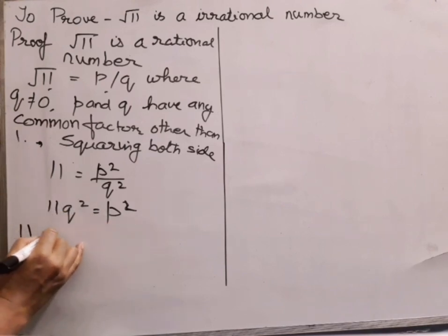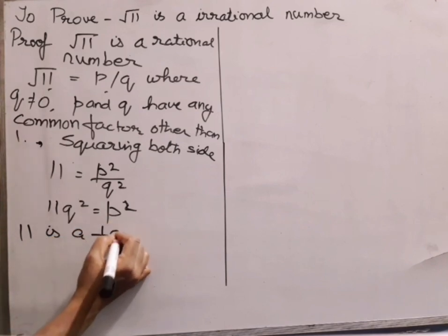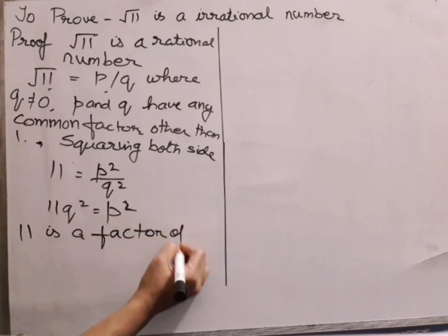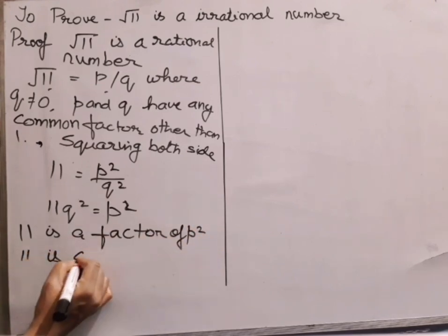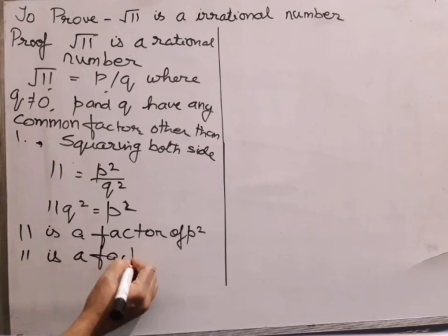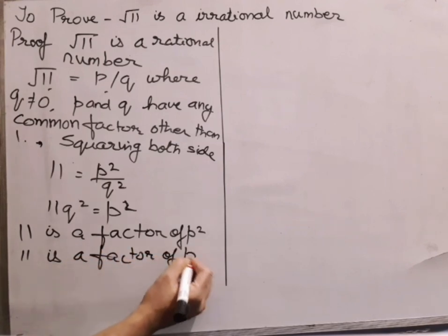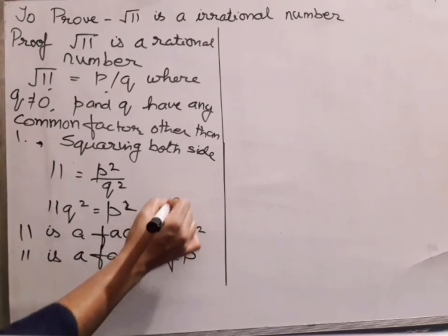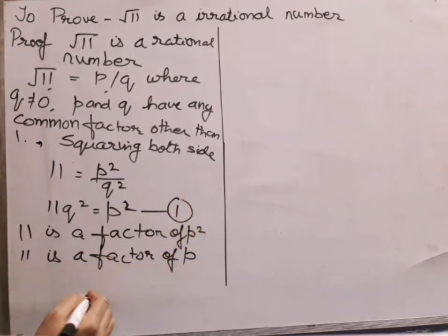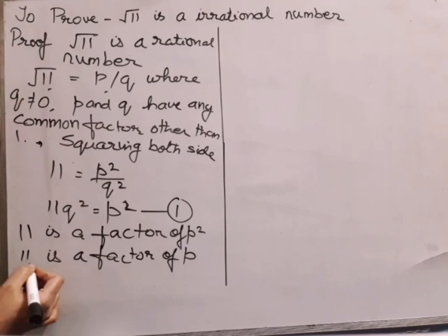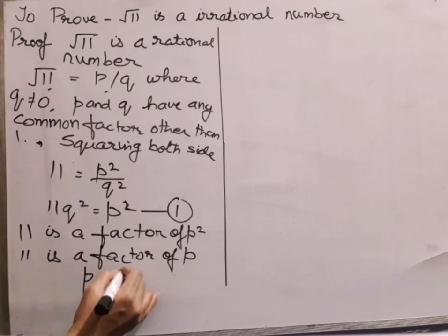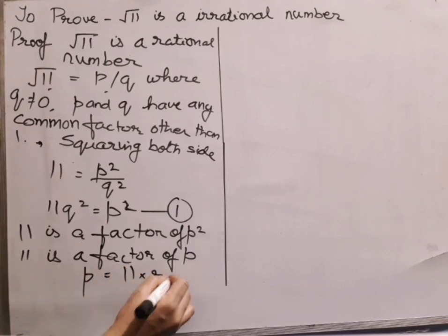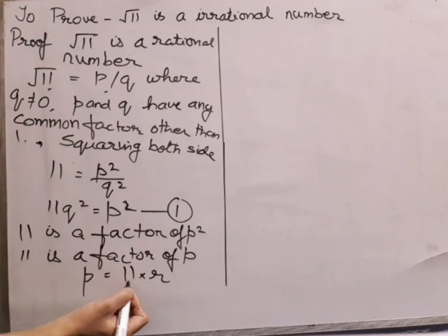Since 11 is a factor of P², then 11 is also a factor of P. I am taking this as step 1. If 11 is a factor of P, it means some number R is multiplied with 11 to give P. So I can write P = 11R, where R is any integer.